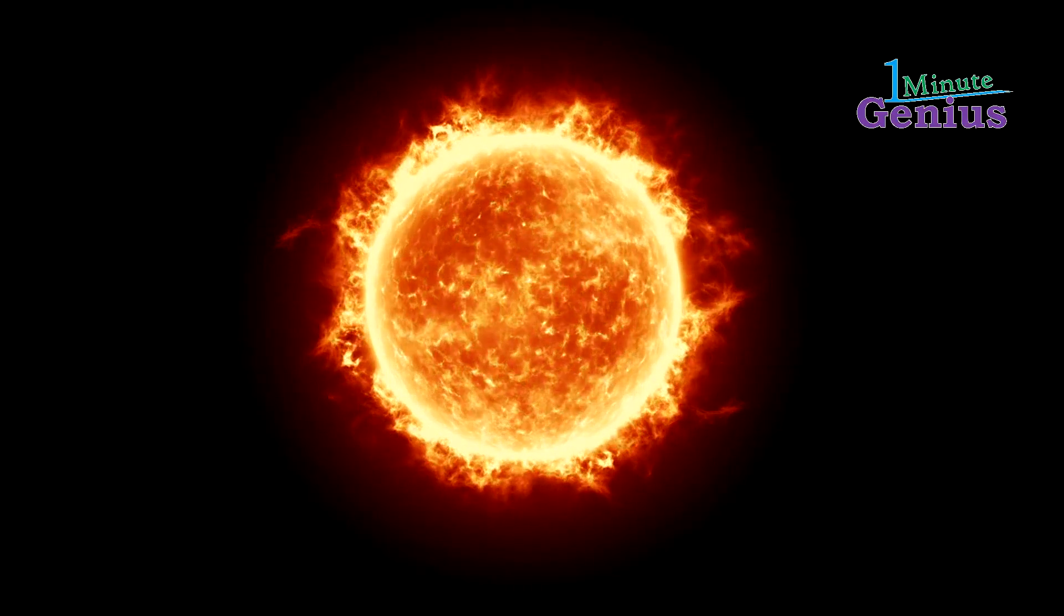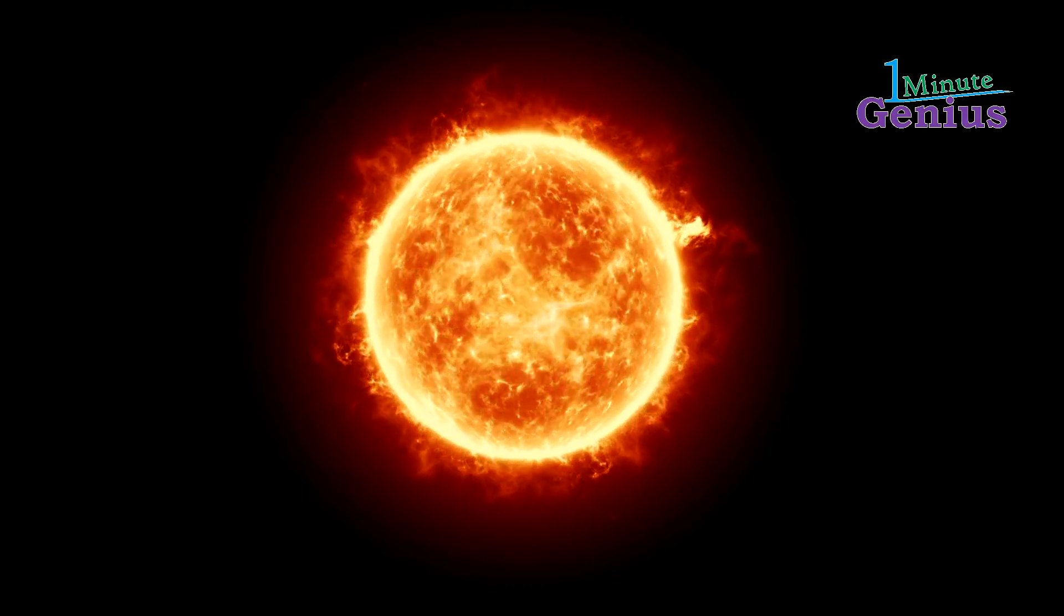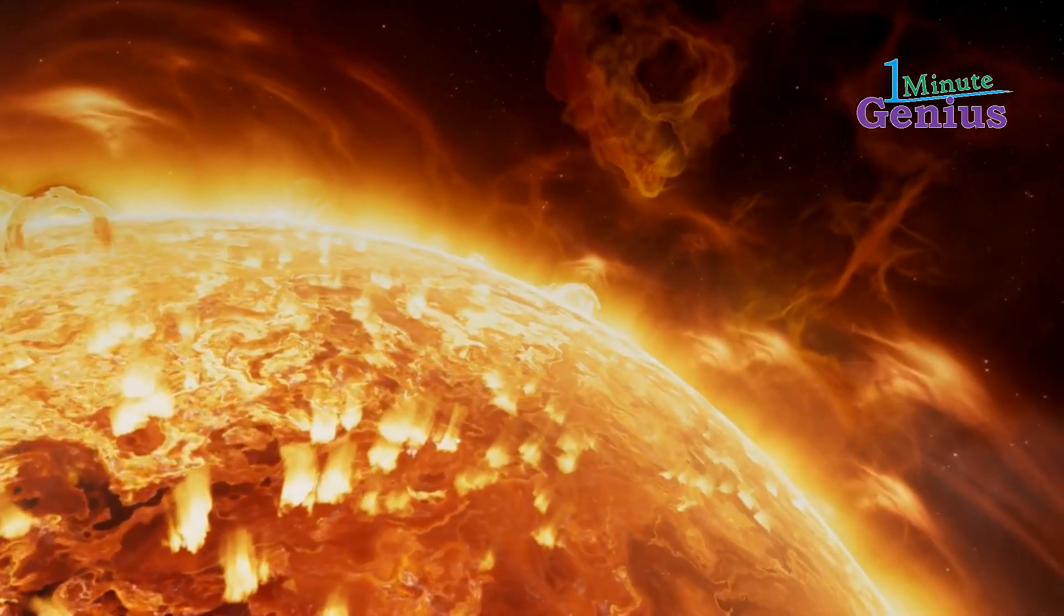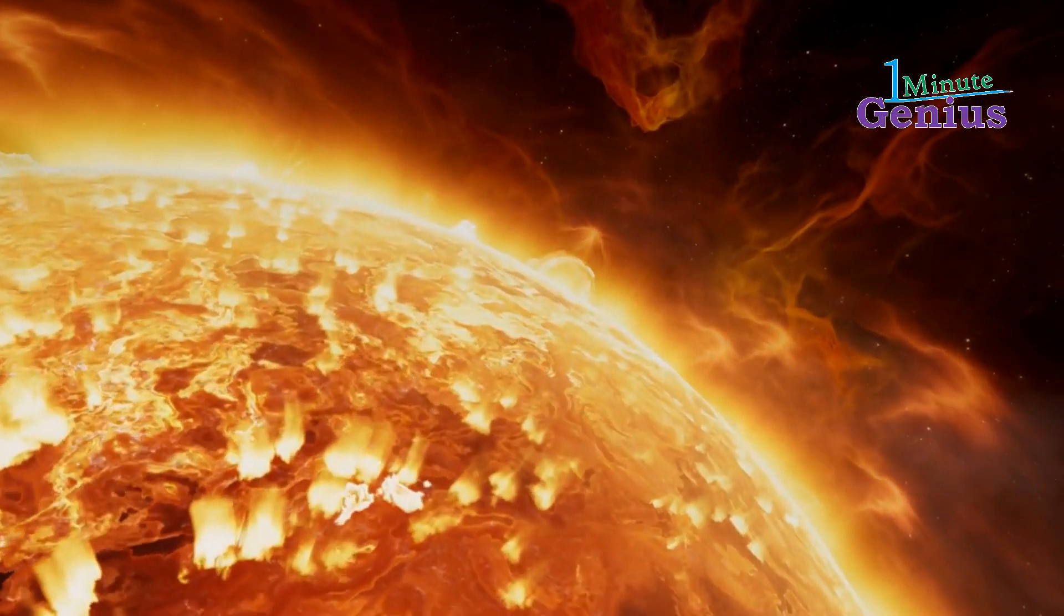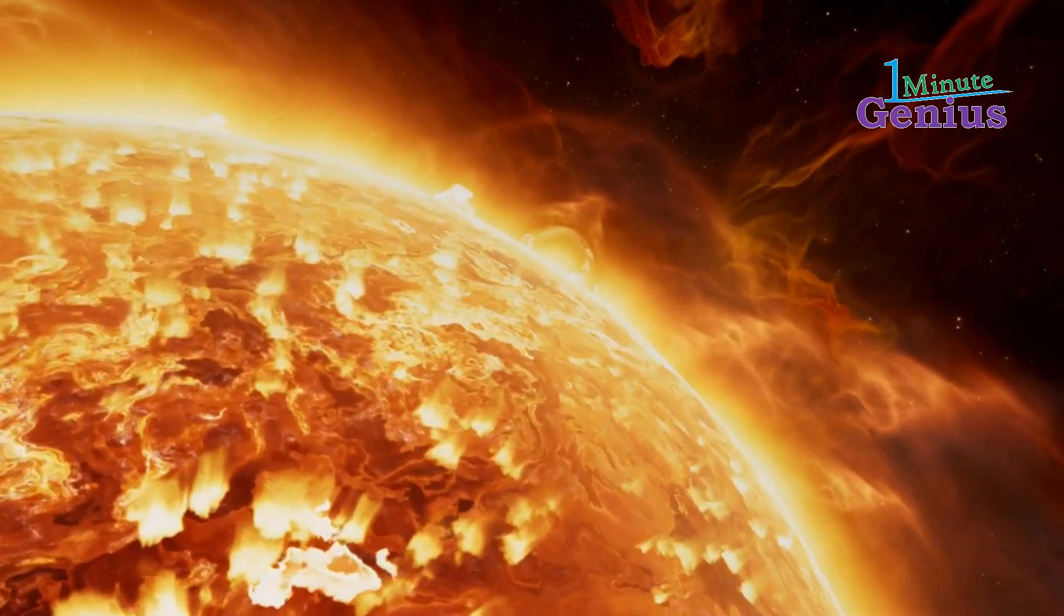This energy radiates outward, providing the essential light and warmth that sustains life on Earth. The Sun has a profound influence on the dynamics of the solar system, dictating the orbits and climates of the planets.